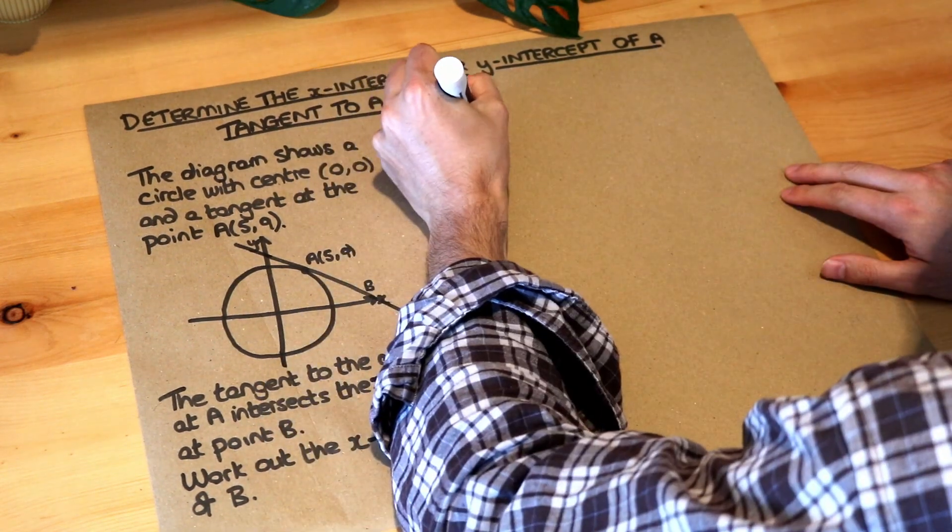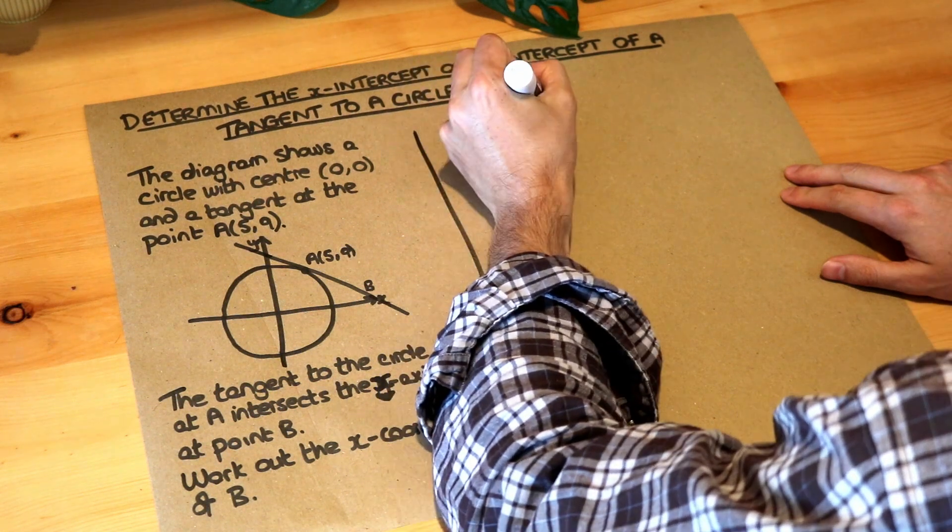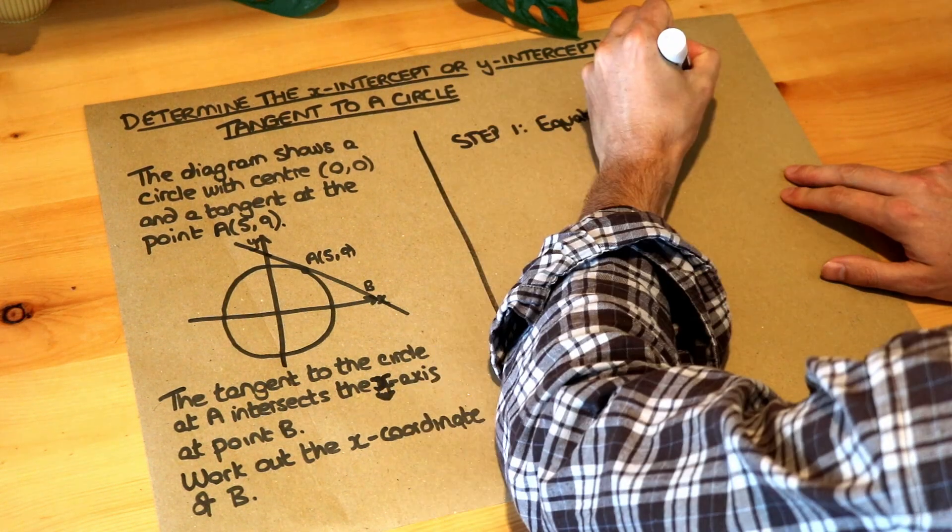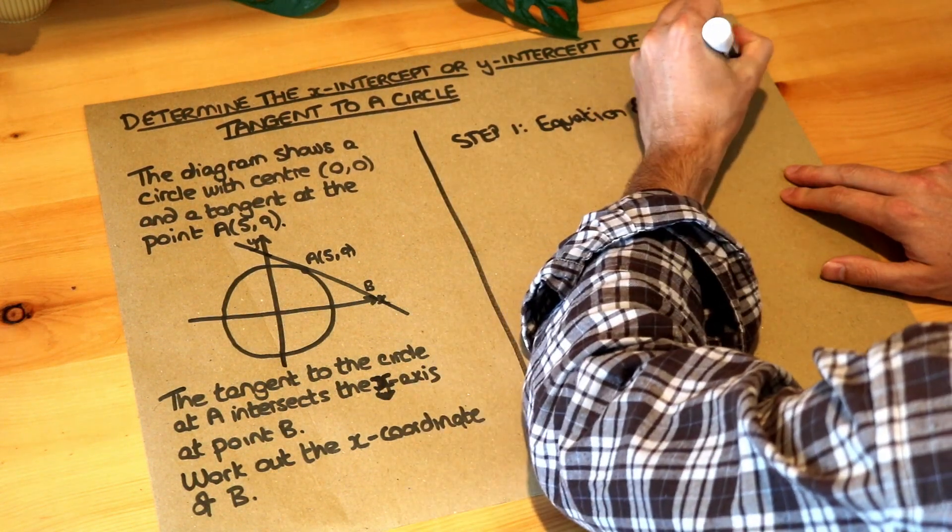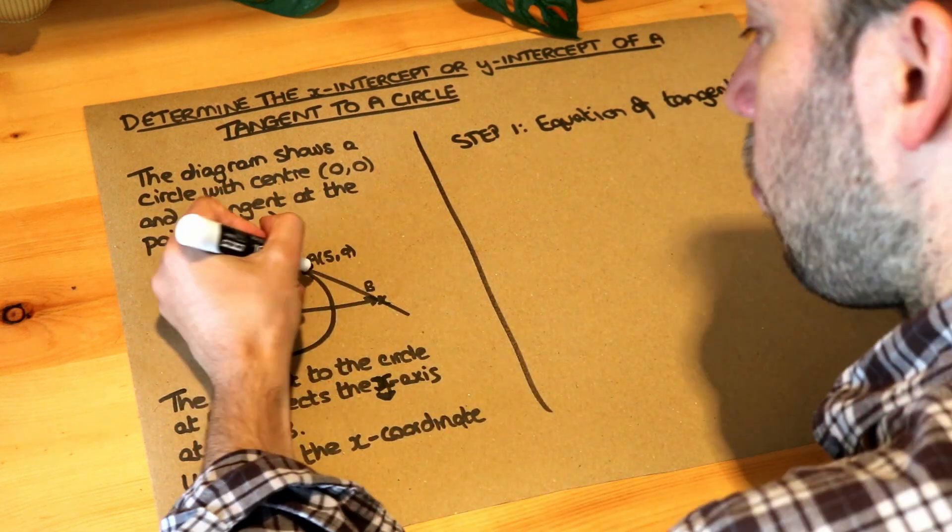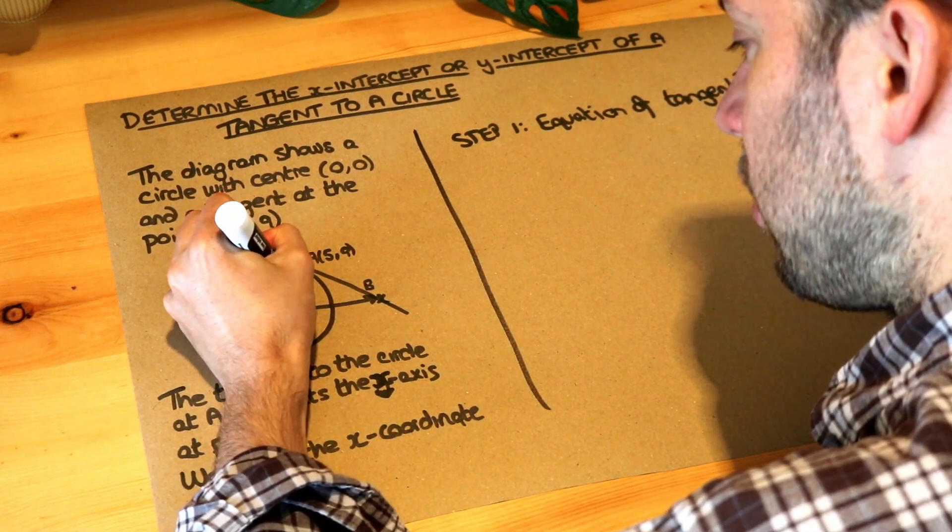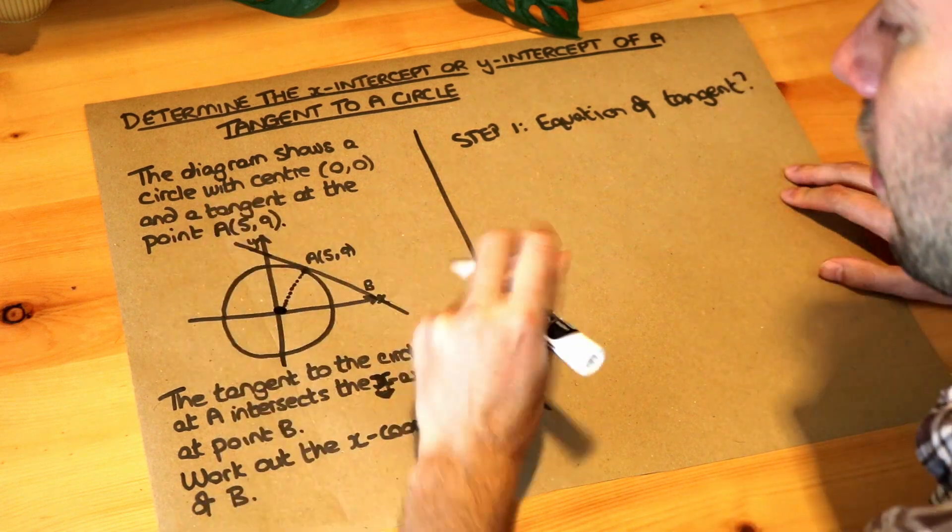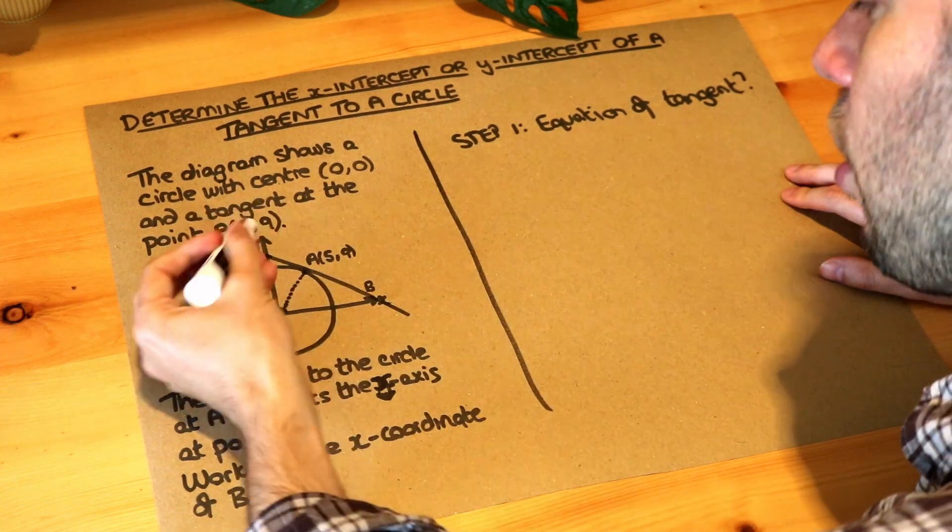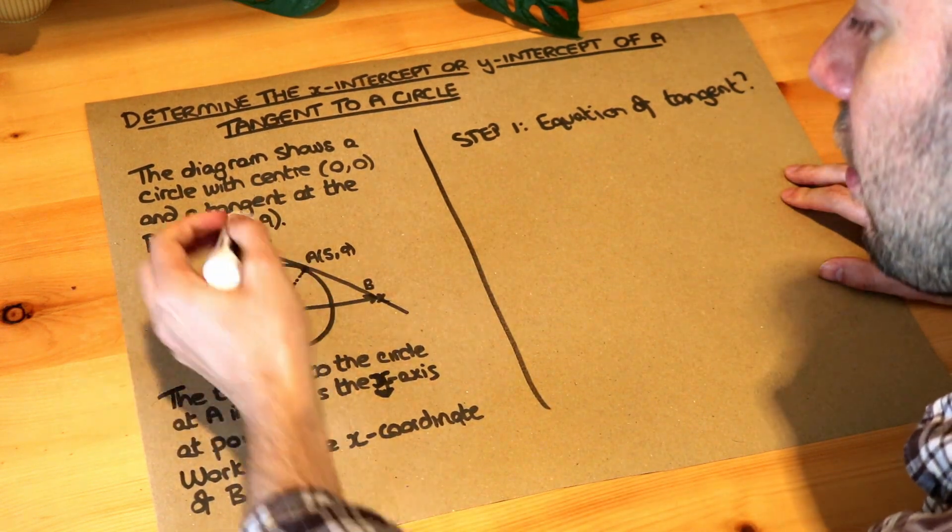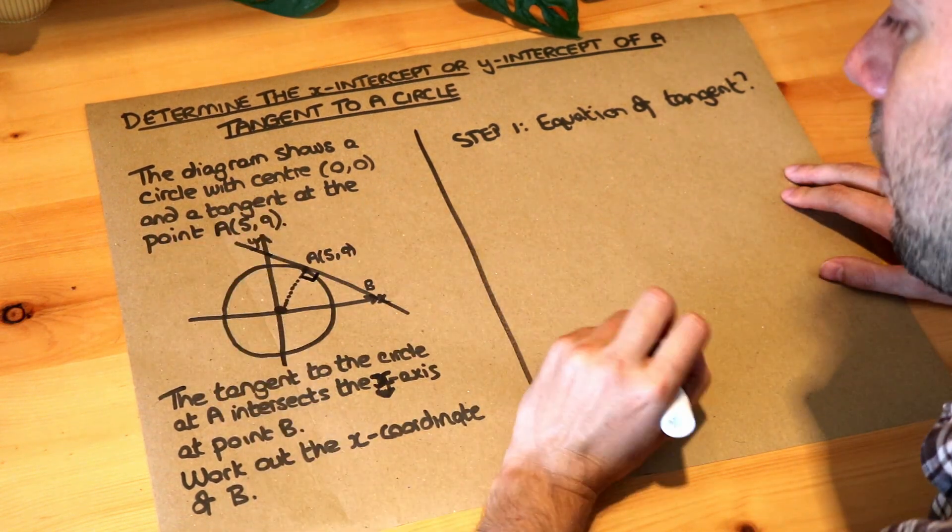So step one is just to find the equation of the tangent. Now let's quickly remind ourselves how we did that. We drew in the radius of that tangent to the centre of the circle. So this is the radius here and we know that the tangent and the radius, they meet at a right angle like that.